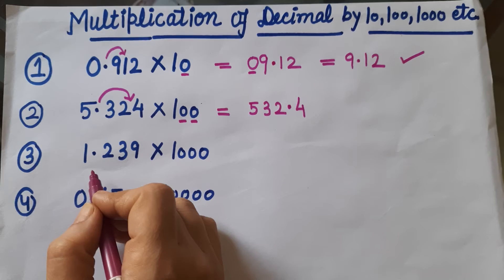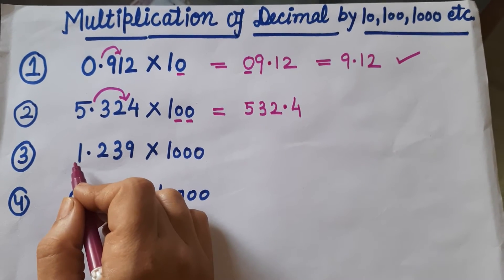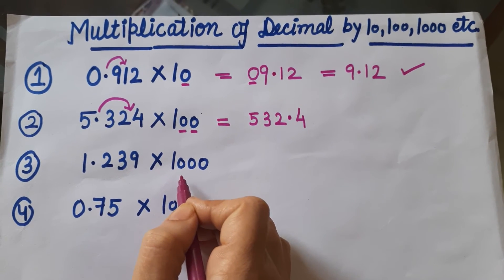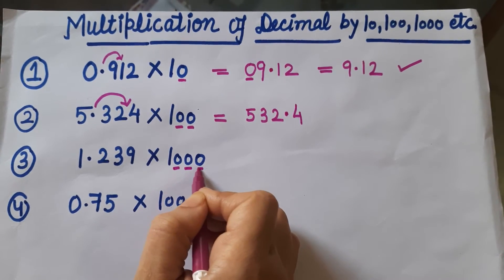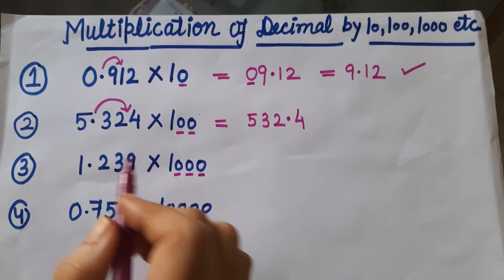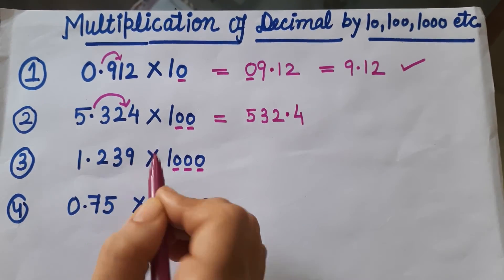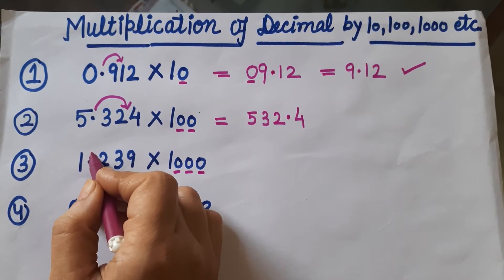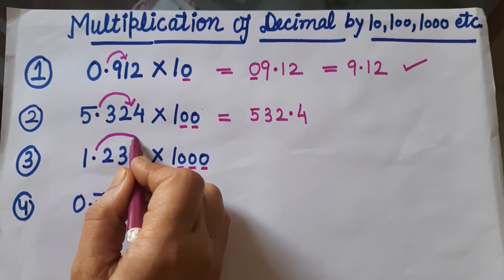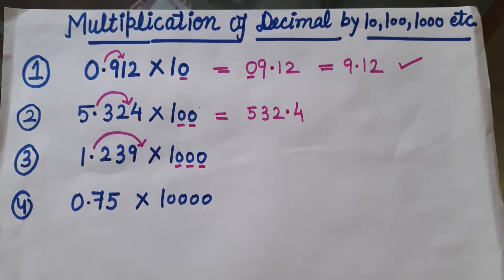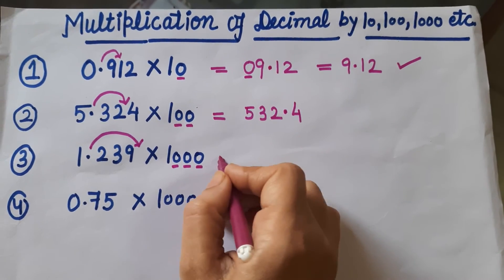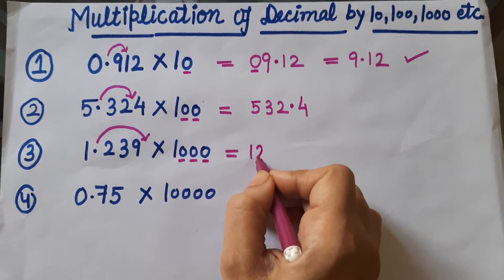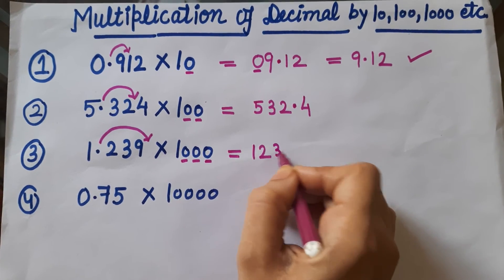Now let's move to the next example. Here is 1.239 which is multiplied by 1000. In 1000 we have 3 zeros. Now our decimal will be shifted after 3 digits of the right term. The decimal will be shifted after 3 digits. So what will be the answer? 1, then 2, then 3, then 9.